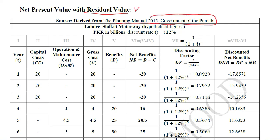In 2015 it was published by the Government of Punjab, Pakistan. The Lahore Sialkot motorway is a physically existing motorway; however, the data here is hypothetical. The discount rate is already given — we do not have to worry about it. It will be 12%.